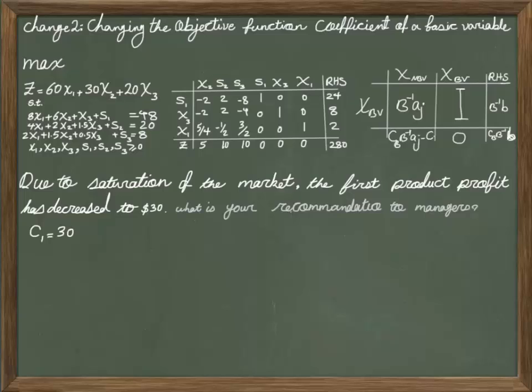If you're changing the objective function coefficient of a basic variable, we are changing our matrix Cb. If I look at the given matrix of equations, I see Cb appears in this equation as well as this one.